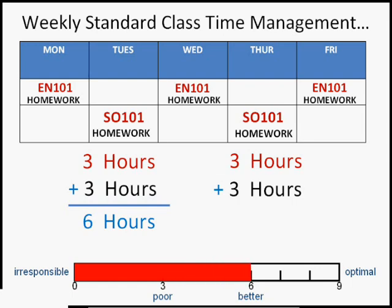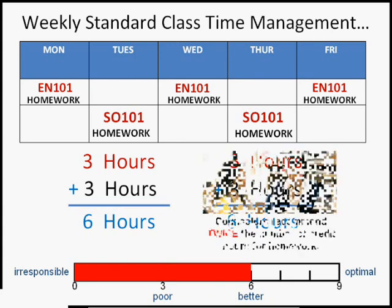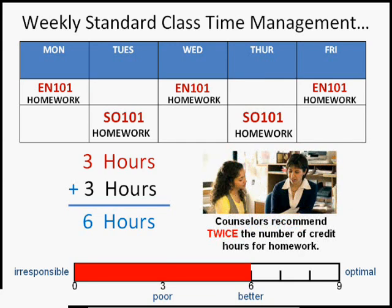That adds up to six hours, but it's still not the optimal amount of time. Counselors recommend twice the number of credit hours for homework — that's a three-credit course, so twice three equals six hours of homework — and again, nine hours would be the optimal amount of time you would spend every week on that subject.